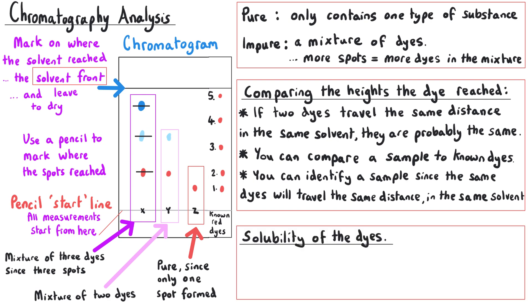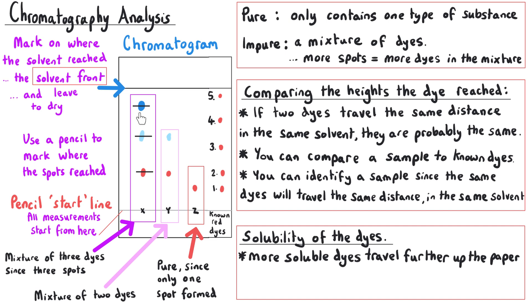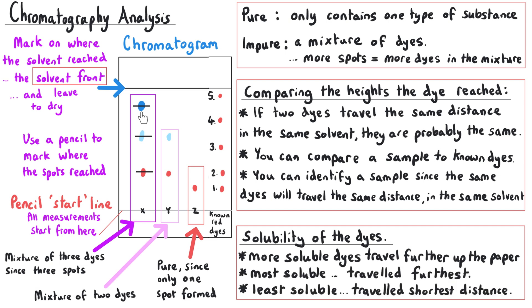The final way we can use our chromatogram is by making statements about the solubility of different substances. The further a dye has travelled, the more soluble it is in the solvent used. The blue dye present in X appears to be the most soluble of all substances tested because it travelled the furthest up the paper. The red colour in Z travelled the least distance up the paper, meaning it is the least soluble of all the dyes tested.